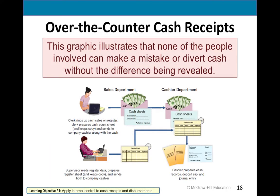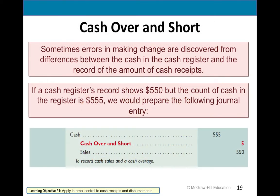For counter receipts, you've got to make sure not only do they charge the right amount but they receive the right amount. No one should make a mistake or divert cash — even by accident, you've got to figure out why an error was made. For example, if your register tape says you should have $550 but you have $555, that $5 extra could be due to error — maybe someone left money behind — and it goes to cash over and short.